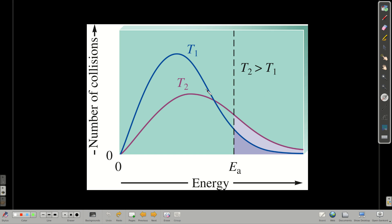If we look at a reaction at two different temperatures, and if this amount of energy is the activation energy — when the reactants come together, they have to have this much energy or more for the reaction to occur. At one temperature, the curve of number of collisions versus energy looks a certain way, and everything under this curve past the activation energy has enough energy to react. At T2, the curve shifts and more of the molecules have enough energy to react, getting over the activation barrier.